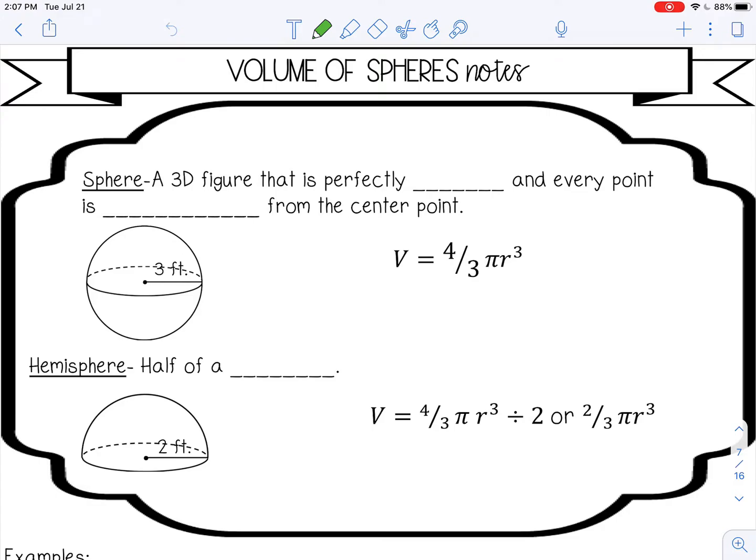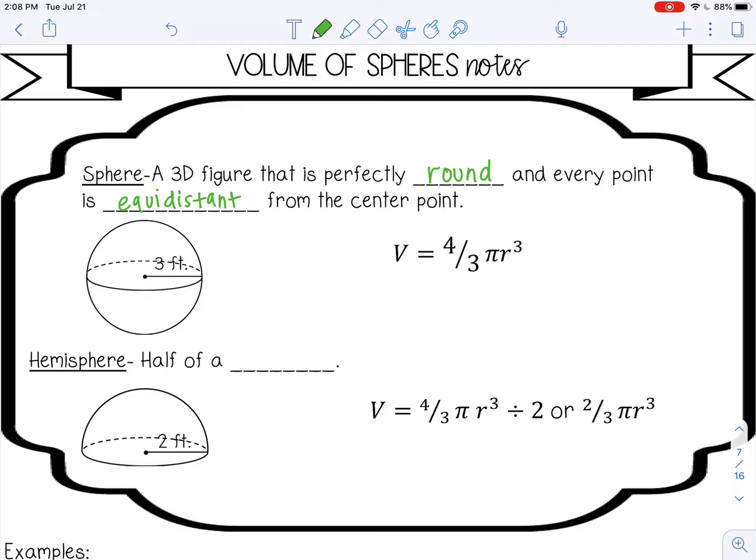Welcome to this lesson on the volume of spheres. A sphere is a 3D figure that is perfectly round, and every point is equal distant or the same distance from the center point. The formula for volume of a sphere is four thirds pi r cubed.